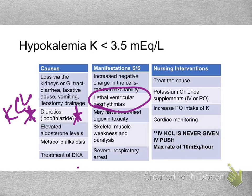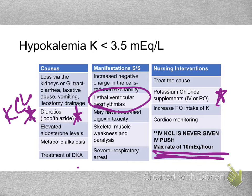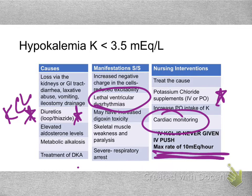To get potassium levels up, we supplement — orally or IV. Something critical to remember is we never give potassium too fast, as it can kill the patient. It's always given at a slower rate, takes hours, and is never given IV push. Any patient with potassium imbalances, whether high or low, must be monitored on telemetry because of these lethal dysrhythmias.